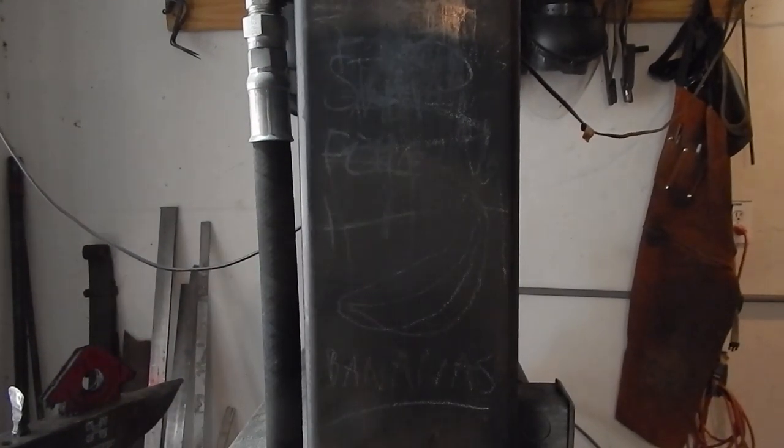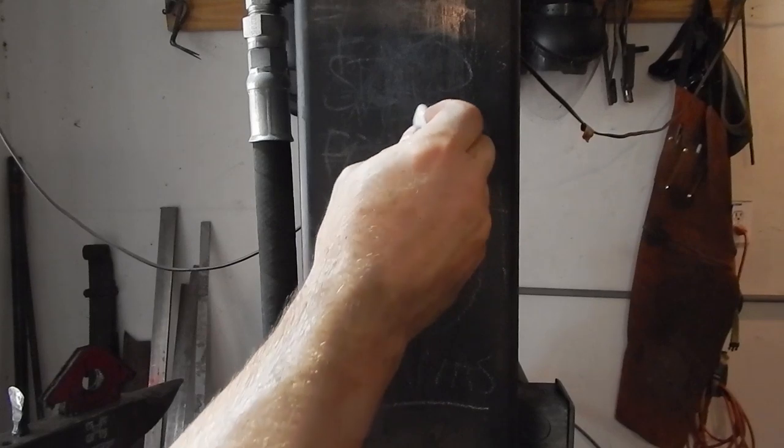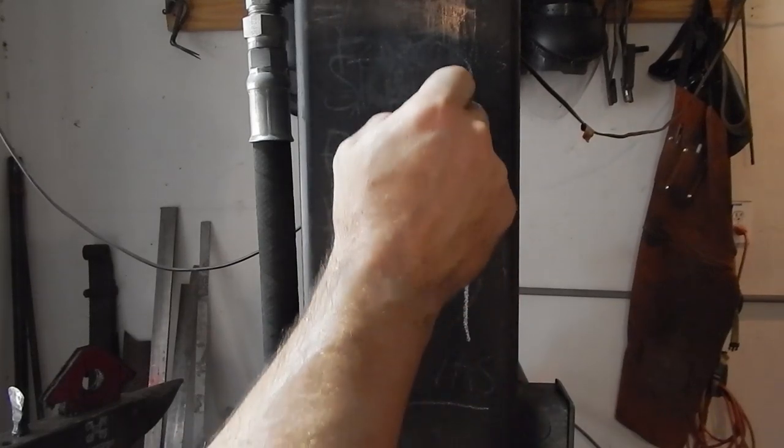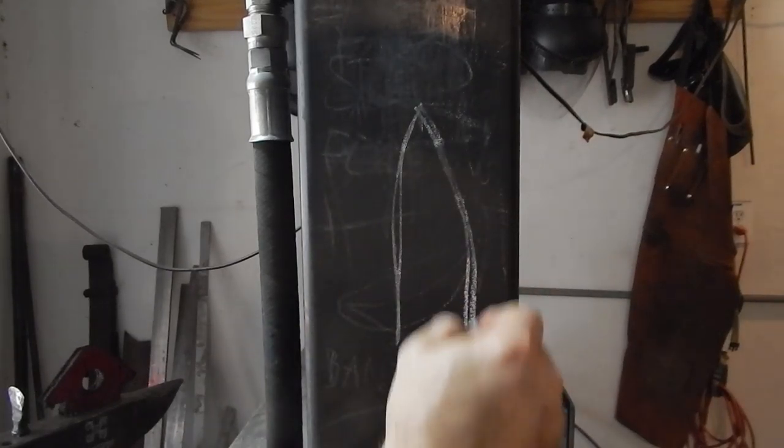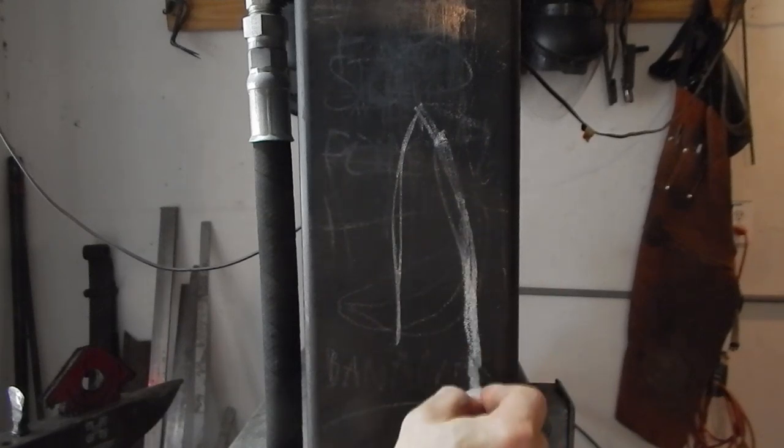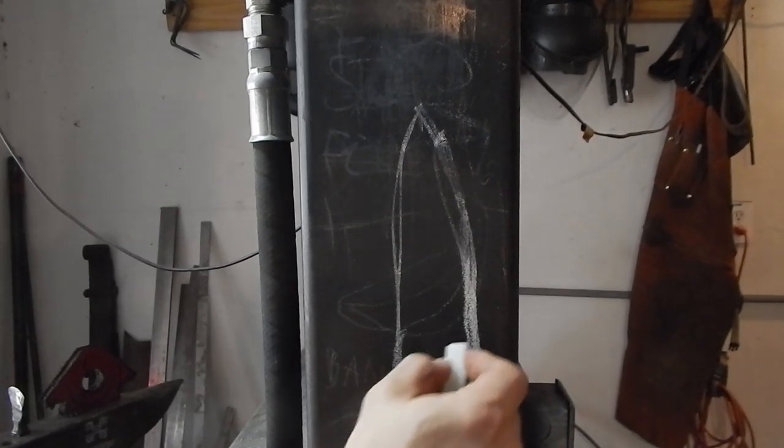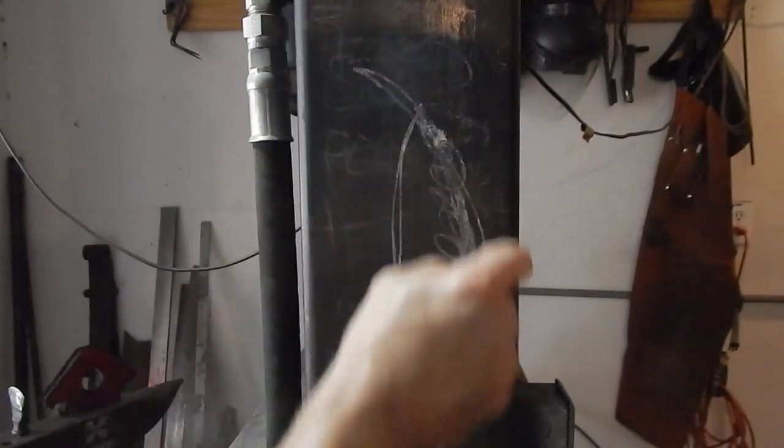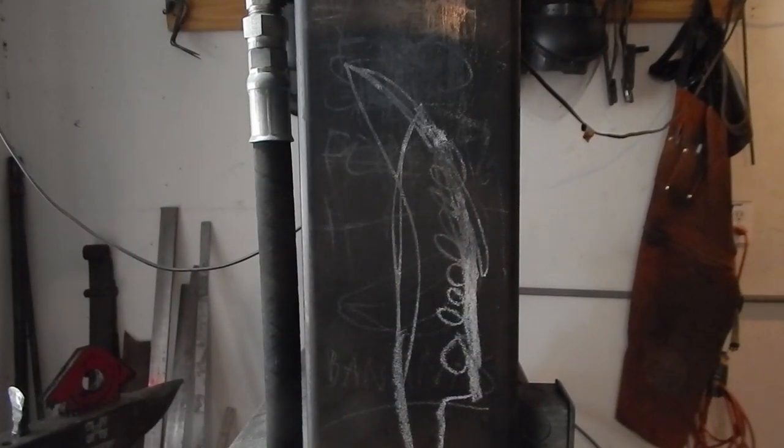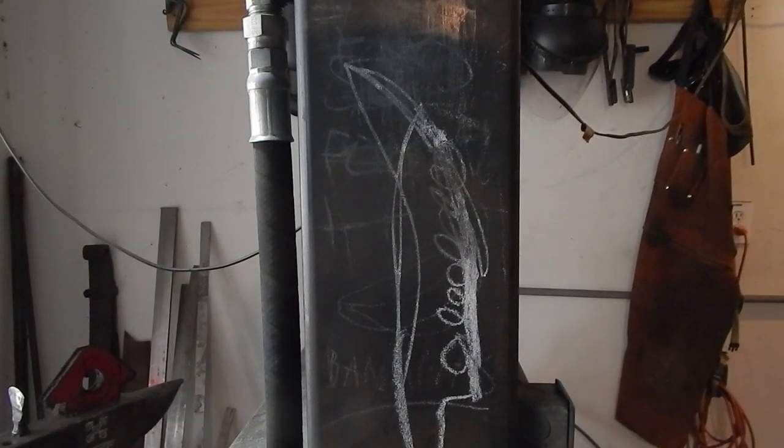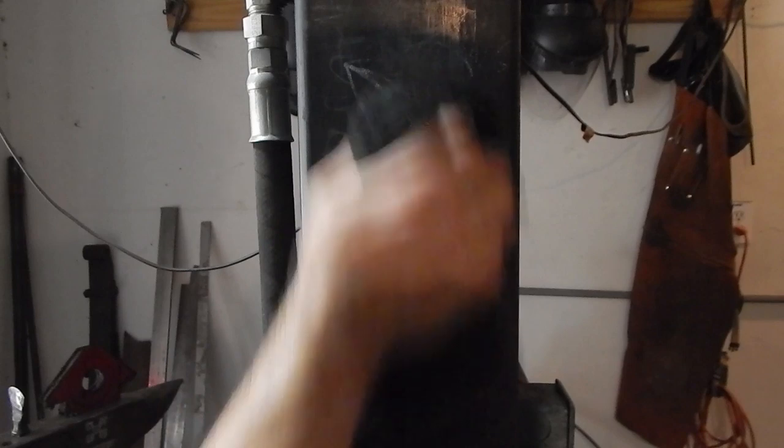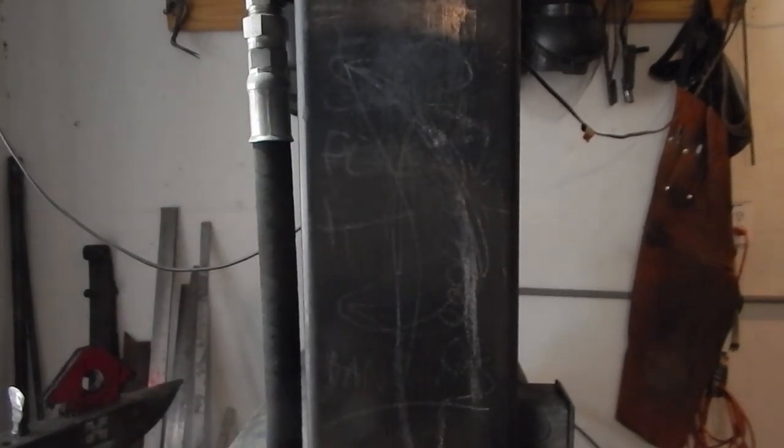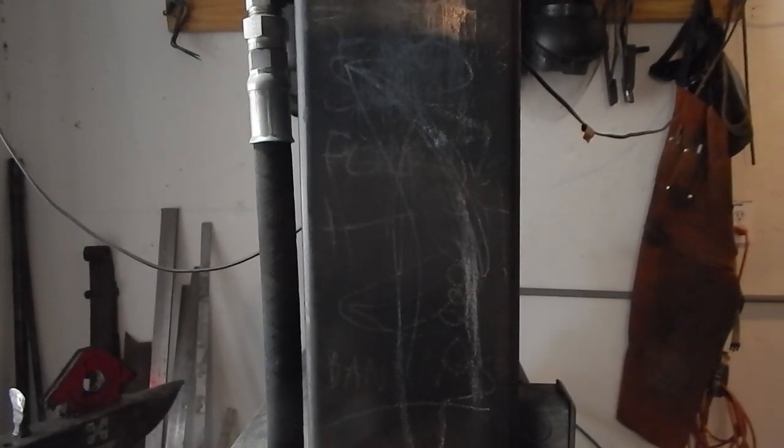All right, we have our tip. Now it is really tempting at this point to go bam bam bam bam bam bam and curl that thing back like a banana. But remember, we don't want to do that this time. What do we want to do? We want to forge a slight drop point.